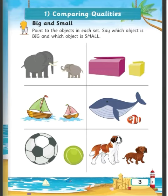Students, then the next picture of the Dog, in which the first dog is Big and the second dog is Small.